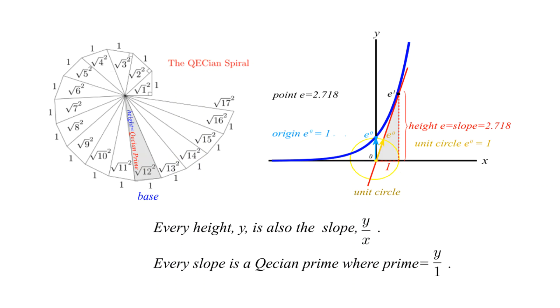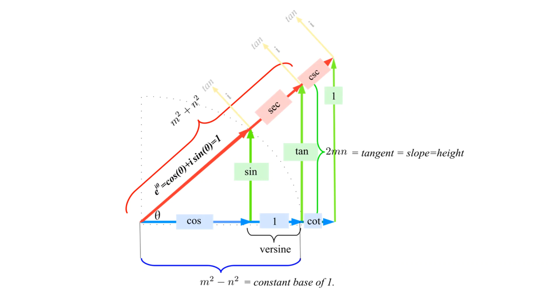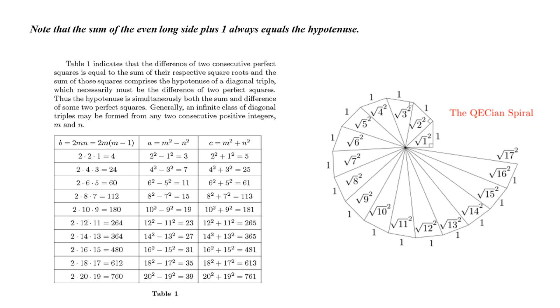Where every odd integer is a difference of two perfect squares, we reconfirm that every integer is indeed a quaternion, where n over 1 equals y over x equals the slope equals a quaternion, where n is any positive integer. And since there are infinitely many Pythagorean triples, then there are infinitely many sides in a Quikian spiral, including the hypotenuses. Therefore, there are infinitely many primes of the form 2n plus 1, where 2n plus 1 must obey Euclid's formula: the hypotenuse equals m squared plus n squared equals sides a plus b equals 2n sub 0 plus 1 equals a prime. Therefore, the Quikian expression of the near prime conjecture is true. There are infinitely many primes p such that p minus 1 is a perfect square, and there are infinitely many primes of the form 2n plus 1.